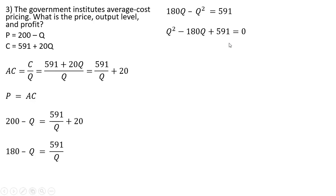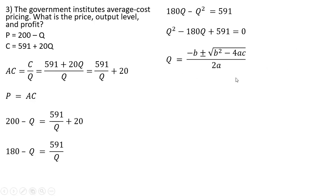We're going to use the quadratic formula to solve for Q. Here is the quadratic formula. We plug our results in: b is minus 180, a is 1 (the coefficient in front of the Q squared), and c is 591.